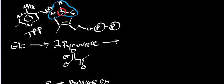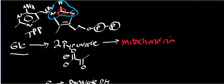In glycolysis, we started with glucose and ended up with two pyruvates per glucose. The pyruvate that we generate is going to go into the mitochondria — there are transporters in the membrane, and ultimately the pyruvate ends up in there.